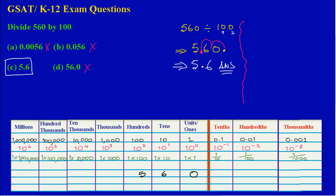Let's try another example to make sure you're comfortable. Say we have 95 divided by 1000. Again, 95 is a whole number, so the decimal point is invisible but sits at the end of the number. Now count the zeros in 1000: one, two, three zeros.